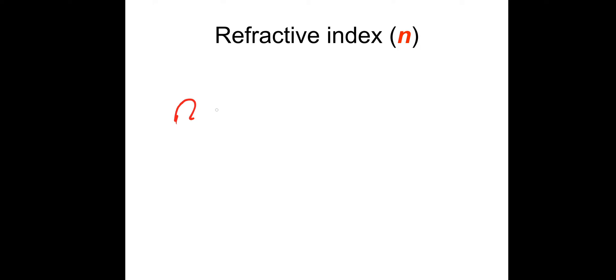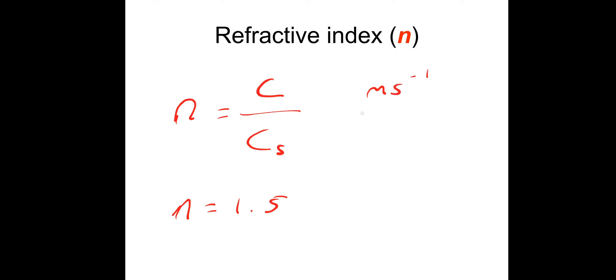So refractive index n — the refractive index is just a number and it's a ratio of the wave speeds. To calculate it we say the refractive index n is equal to the speed of light in a vacuum divided by the speed of light in whatever substance we're looking at. The number n is dimensionless — for example, glass has a refractive index of 1.5, which means light travels 1.5 times slower in glass than in a vacuum. Remember it's dimensionless as we have metres per second divided by metres per second.